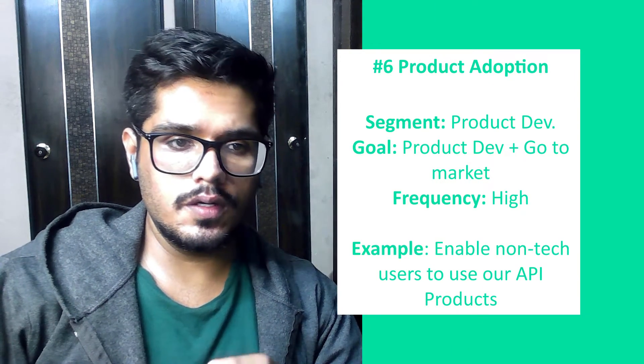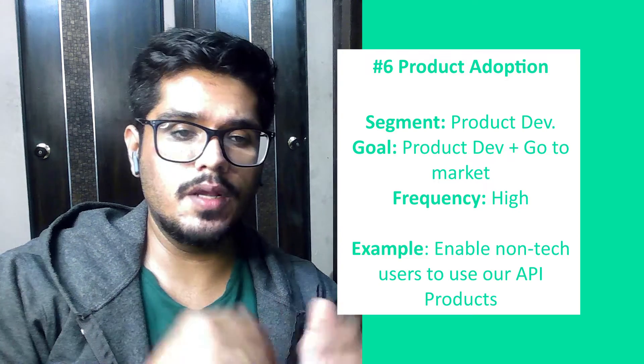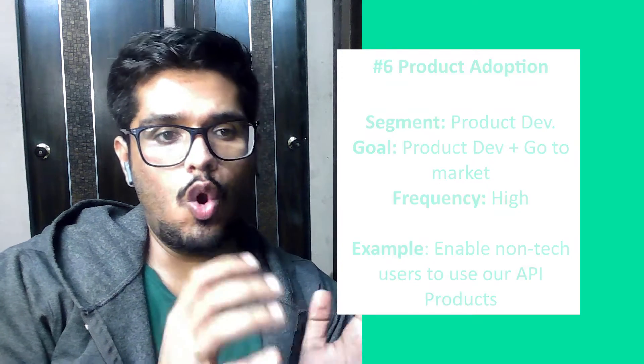Question six is development or product adoption: how would you enable non-technical users to use your API? The goal is to see if you know your personas. APIs typically have business personas who buy the product and developer or technical personas who integrate the API. Once you know what an API is and how it works, it's not hard to find no-code tools and platforms like Postman to test and run these APIs. Tools like Retool and Postman enable testing without writing a single line of code.